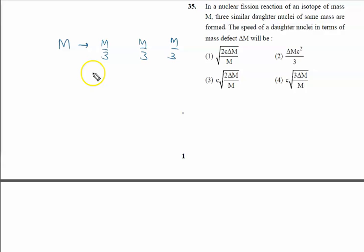The speed of the daughter nuclei in terms of the mass defect, we have to calculate the speed of the daughter nuclei V. All are having the identical velocities, so velocity will be same, that is V, V, V.